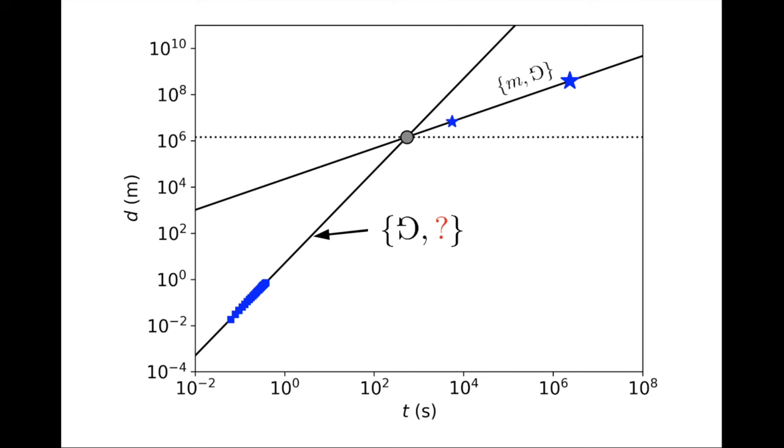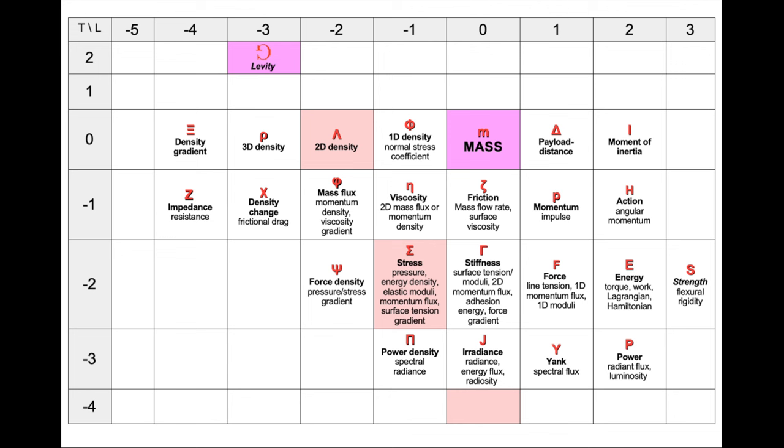We need to find a third one, which would give Galileo's regime, when combined with either the mass or levity. Let's first consider that Galileo's regime depends on levity, not directly on the mass of the earth. In this case, the third quantity must be on a diagonal of slope minus 2, going through levity.